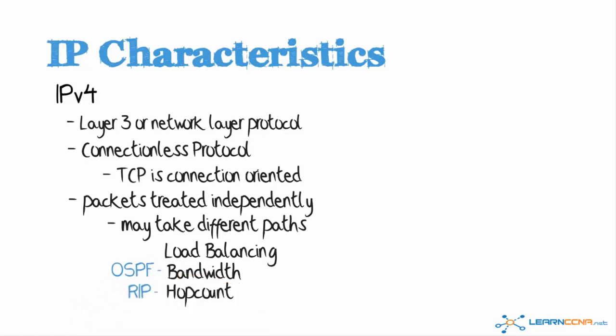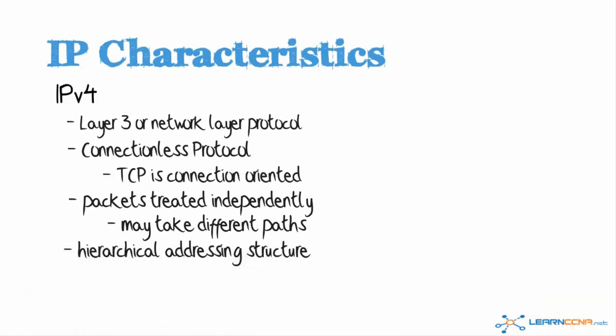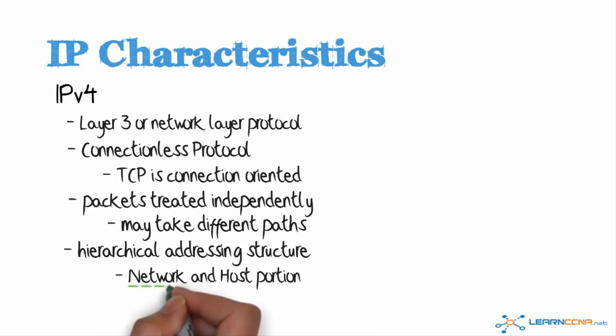For example, OSPF will base it on bandwidth. Other routing protocols will use their own metrics to determine the best path. I'll be discussing routing protocols in more detail later in this course, but in brief, routing protocols determine the best path or best route from A to B. This is based on the hierarchical addressing structure in IP version 4 and IP version 6, where we have both a network and host portion as part of the address. Routers base their routing decisions on the network portion of the address rather than on the host portion of the address.